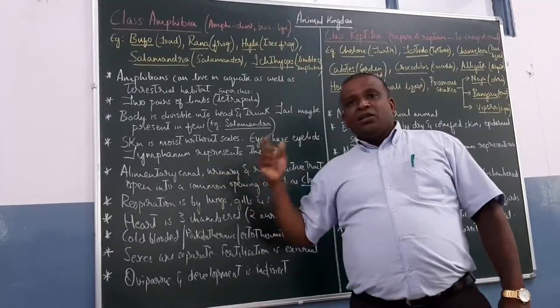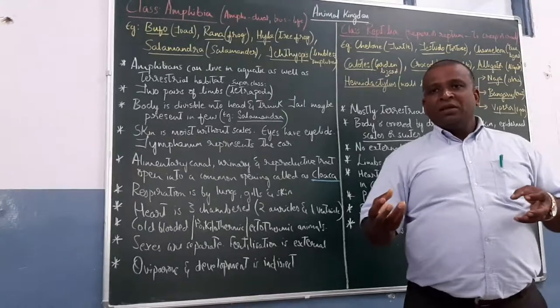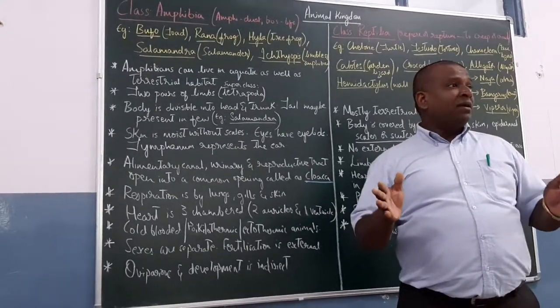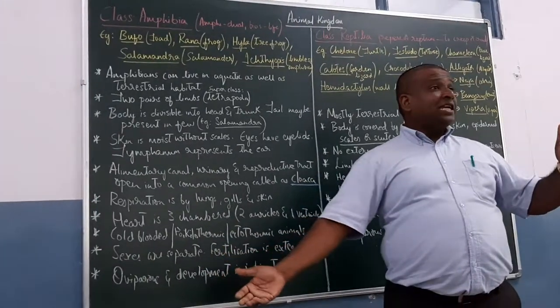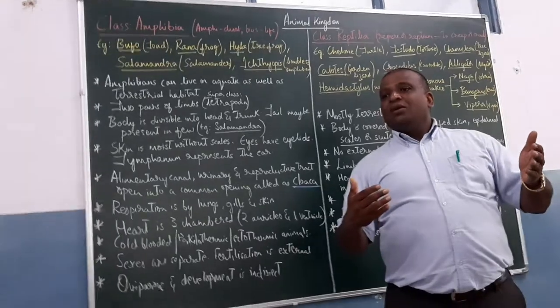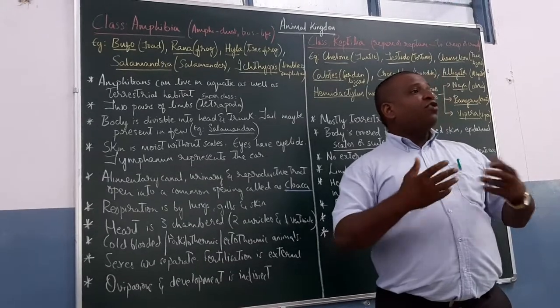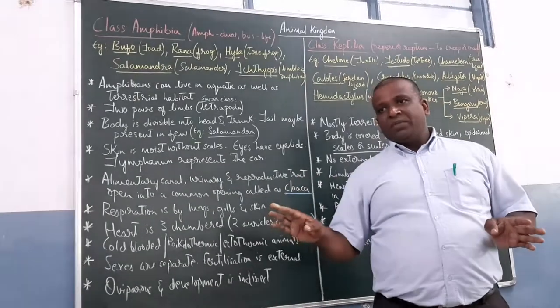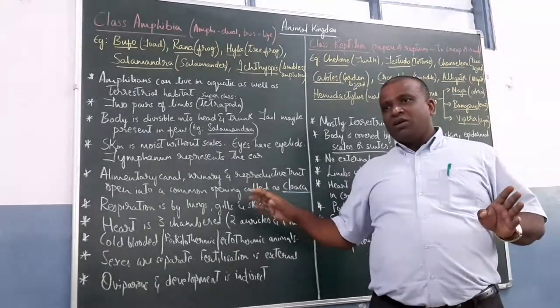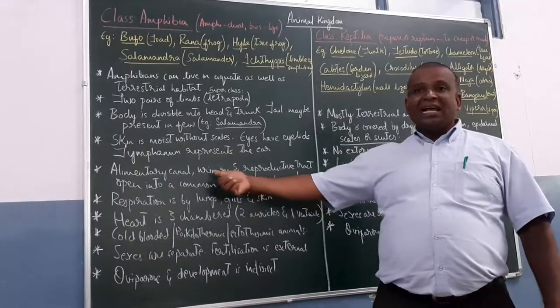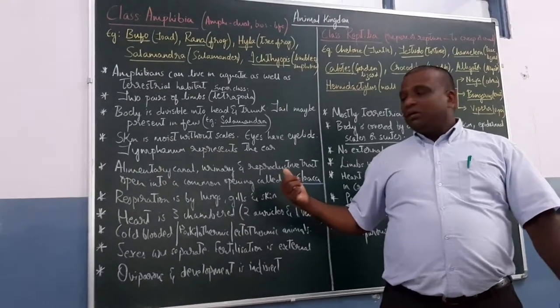So alimentary canal, urinary tract and reproductive tract, that is genital tract, they all have a common opening. So that common opening, we call it as cloaca. There is no anus, urinary opening and genital opening separate. All these three open in a common opening, so we call it as cloaca. They don't have copulatory organs. Copulatory organs aren't there in case of frogs or amphibians. Gametes are also released through the cloaca.